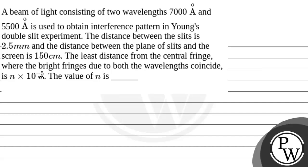A beam of light consisting of two wavelengths, 7000 Å and 5500 Å, is used to obtain an interference pattern in Young's double slit experiment. The distance between the slits is 2.5 mm and the distance between the plane of slits and the screen is 150 cm. The least distance from the central fringe where the bright fringes due to both wavelengths coincide is n × 10⁻⁵ meters. We need to find the value of n.